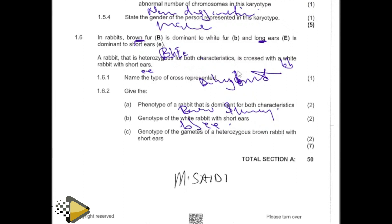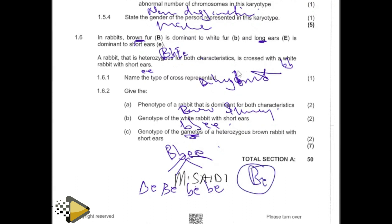The genotype of the white short rabbit is small b small b, small e small e — because white and short are both recessive. They're asking for the gametes of the heterozygous brown short rabbit. So you have to form gametes: capital B small e, capital B small e, small b small e, and small b small e. Leave a space between them. That's why they give you two marks here — one mark and one mark.